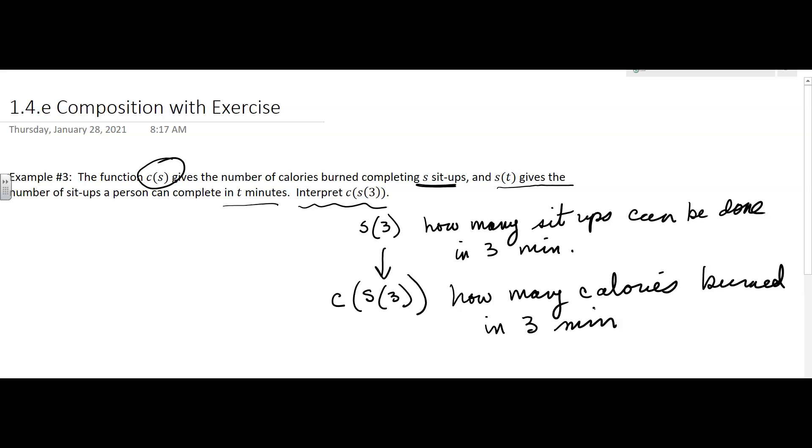I mean, you could say it's how many calories burned based on the number of sit-ups done in three minutes, but it's really the overall statement is saying, okay, you've got three minutes. This s function tells you how many sit-ups that you're going to be able to do, and then c, that function tells you how many calories you burn doing that many sit-ups in the three minutes.